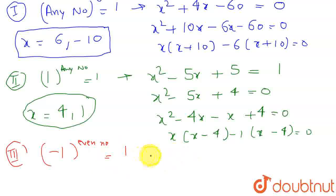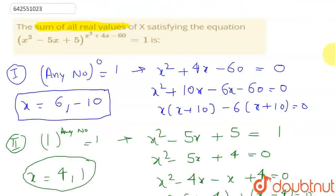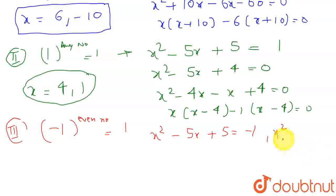So for that, we should have x squared minus 5x plus 5 should be equal to minus 1. And also, x squared plus 4x minus 60, this should be even.